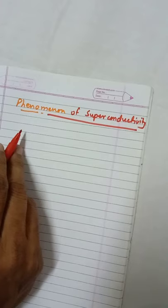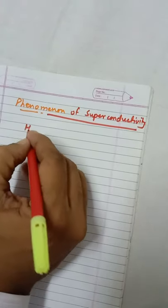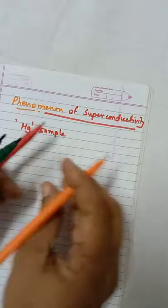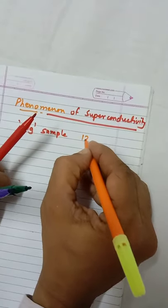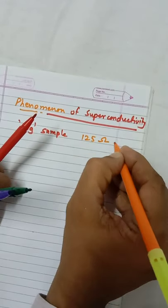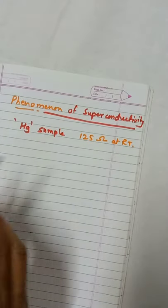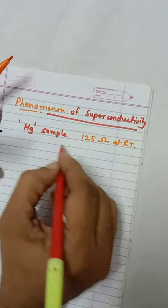Owens found that the mercury sample was offering resistance of 125 Ohm at room temperature.